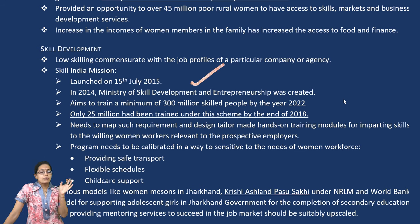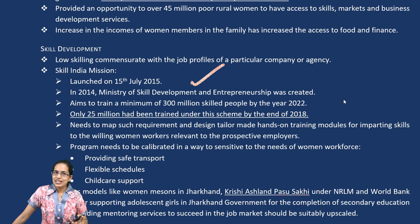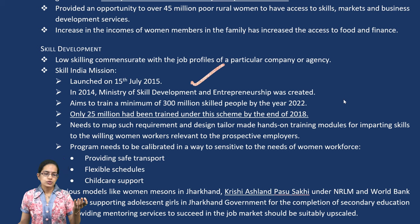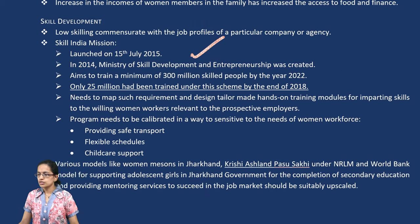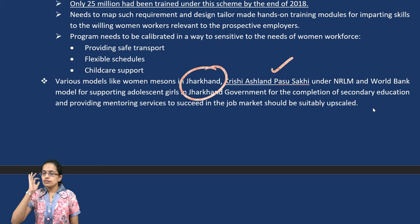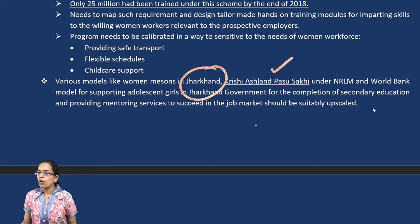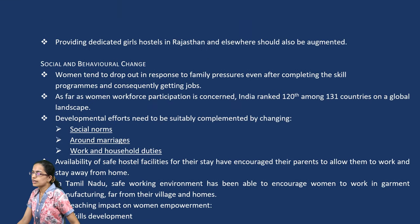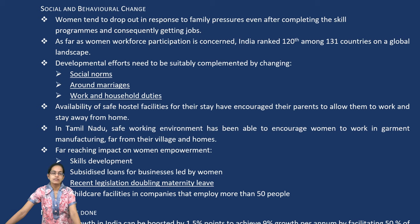Which scheme is brought about by which ministry is a very important question for most examinations. The focus is on providing safer transport systems, flexible schedules, and childcare support systems. You have the Krishi Ashram Pashudhan Sakhi model in Jharkhand, working in collaboration with the World Bank, on various job markets.